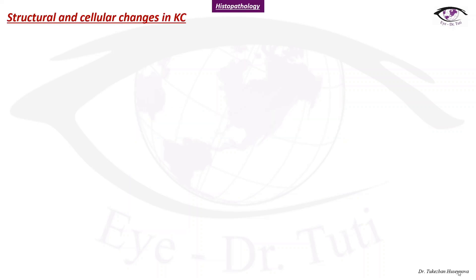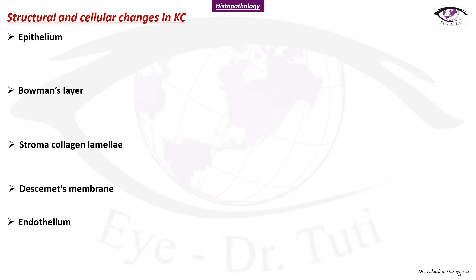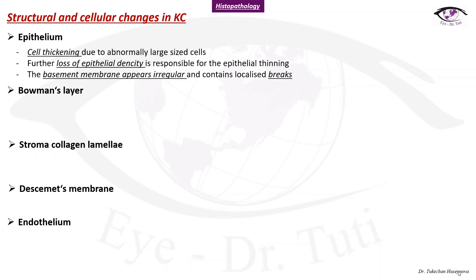Histopathology. Structural and cellular changes in keratoconus are observed in each layer of the cornea. In the epithelium, there may be cell thickening and loss of epithelial density, which is responsible for epithelial thinning. The basement membrane appears irregular and contains localized breaks.